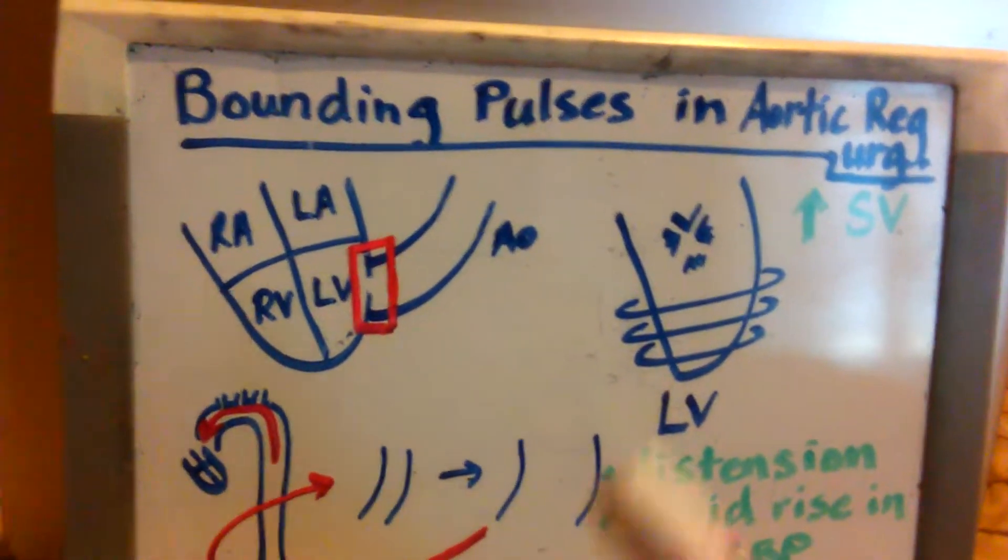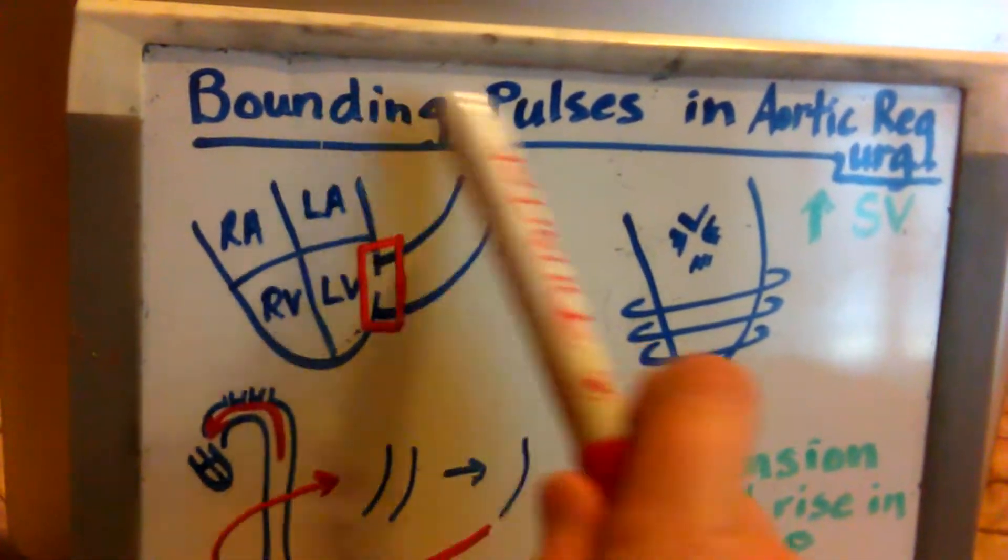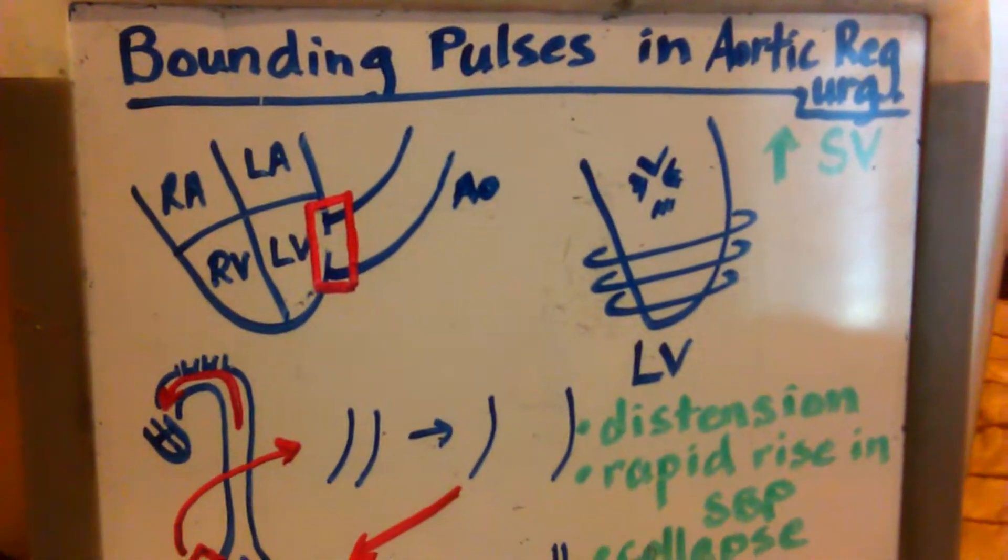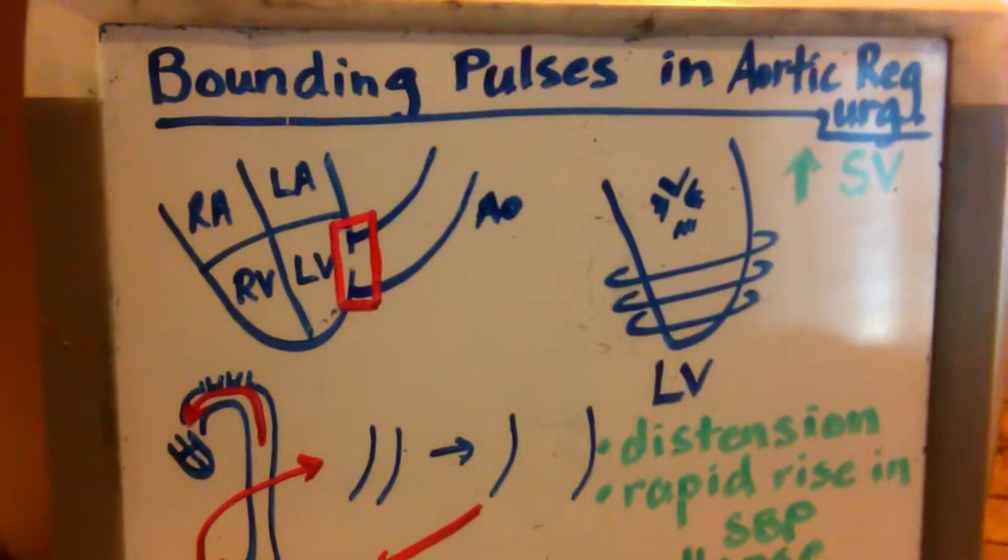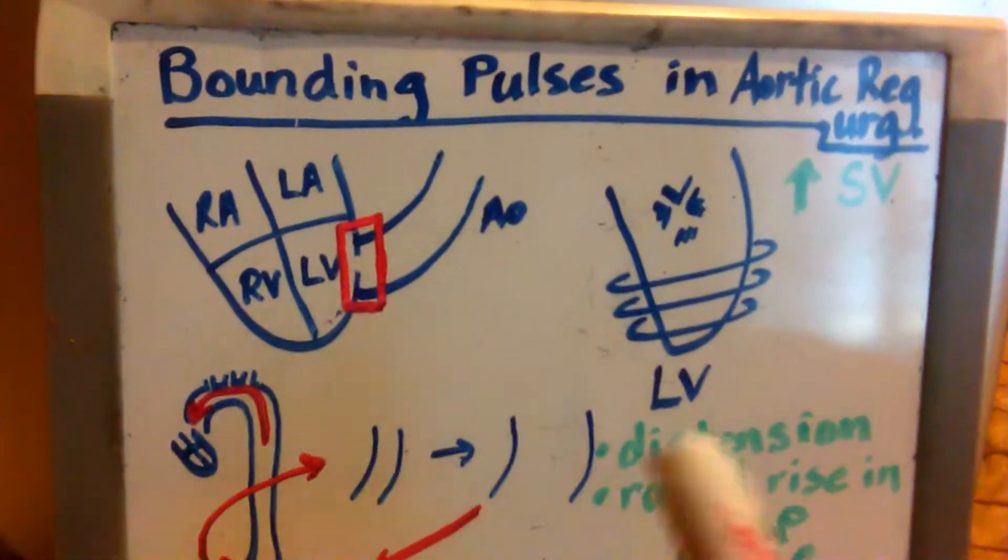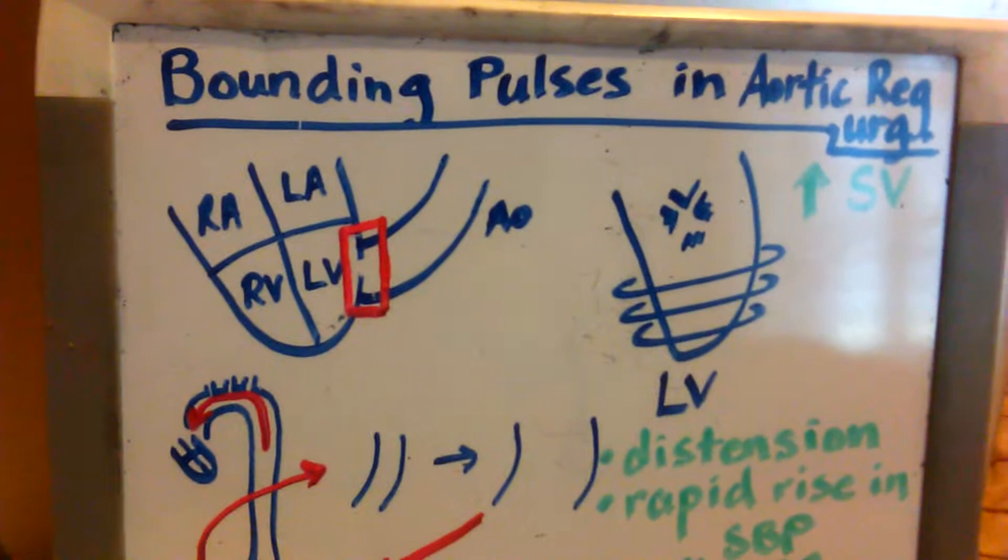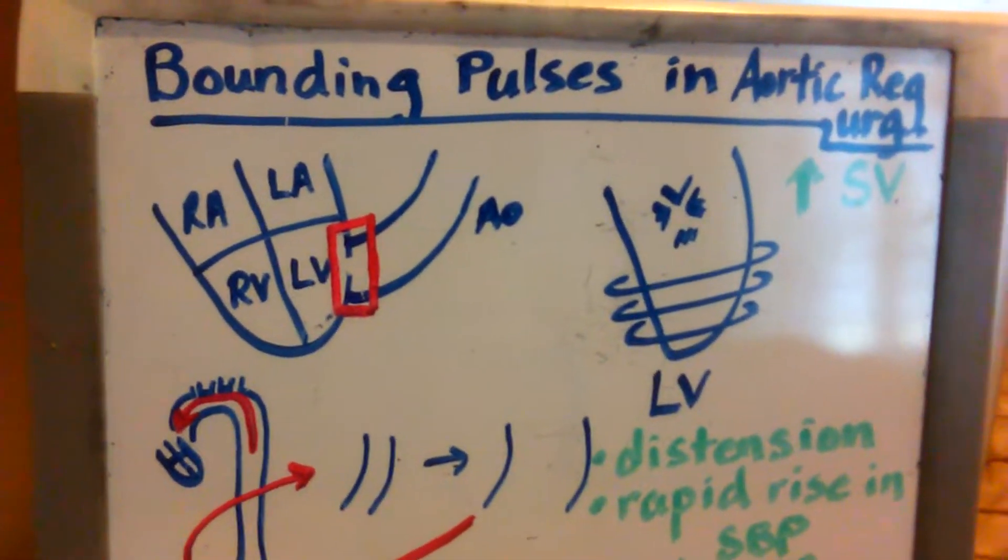Hello, this is a short video describing the phenomenon of bounding pulses in aortic regurgitation. Aortic regurgitation is a valvular defect of the aortic valve, right here, and there are a number of different causes of this which we will not go into right now.